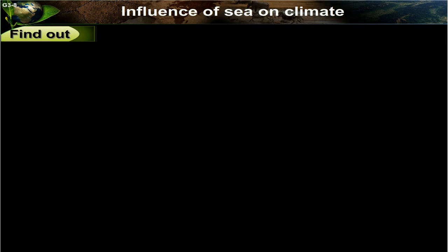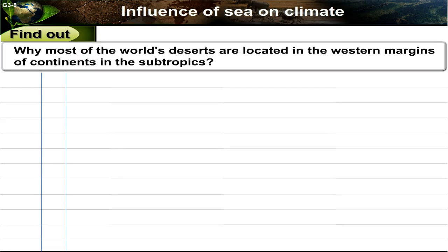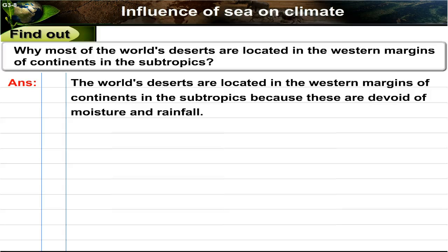Find out: Why most of the world's deserts are located in the western margins of continents in the subtropics? Answer: The world's deserts are located in the western margins of continents in the subtropics because these areas are devoid of moisture and rainfall.